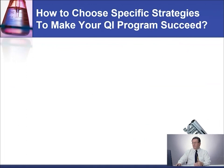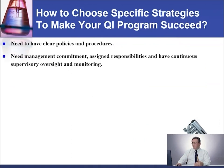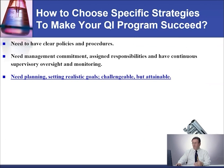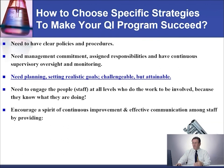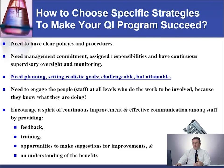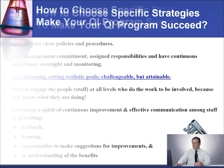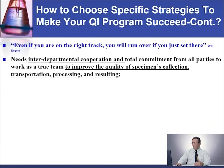How to choose specific strategies to make your quality indicator program succeed: you need to have clear policies and procedures, management commitment, assigned responsibilities, and continuous supervisory oversight and monitoring. You need planning, setting realistic goals — challengeable yet attainable. Engage staff at all levels who do the work, because they know what they are doing. Even if you are on the right track, you will be run over if you just sit there. You need to keep moving.